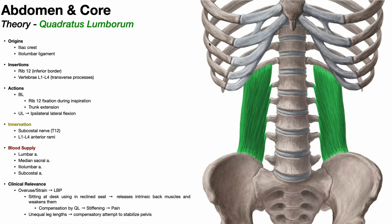You can see it inserting on the inferior border of the 12th rib, and on the transverse processes of L1, L2, L3, and L4.